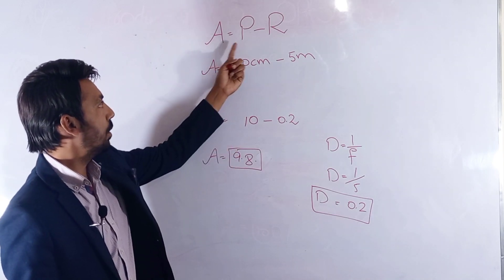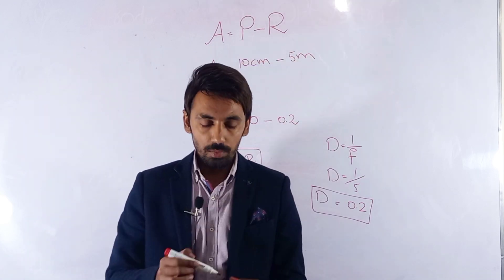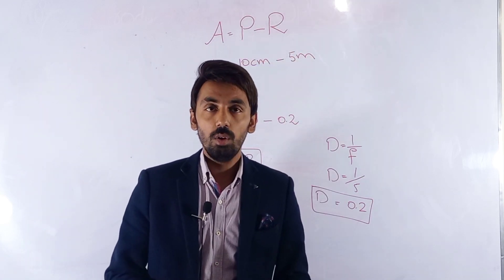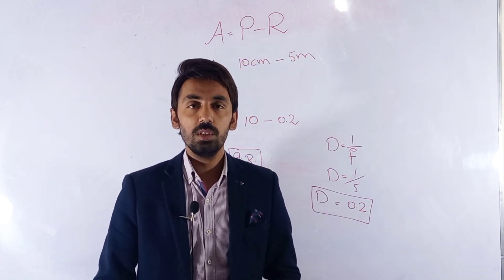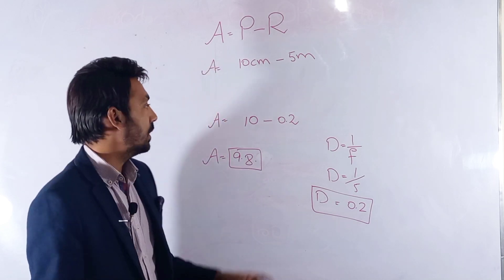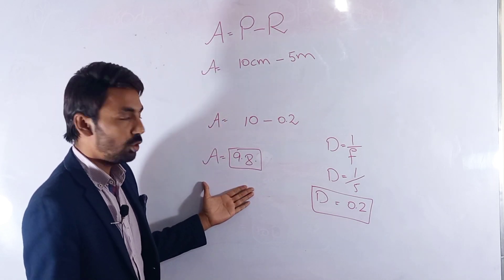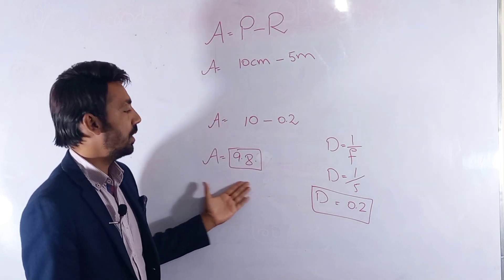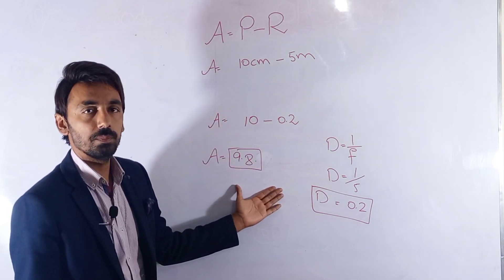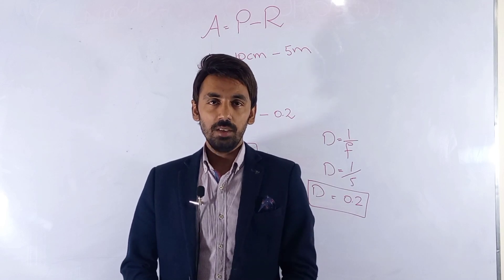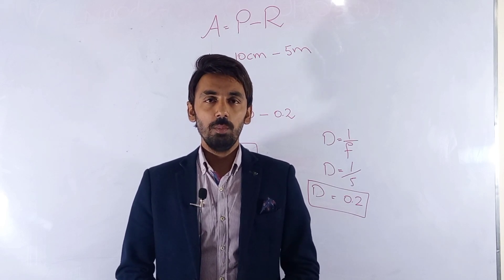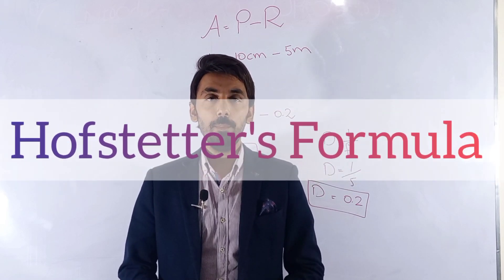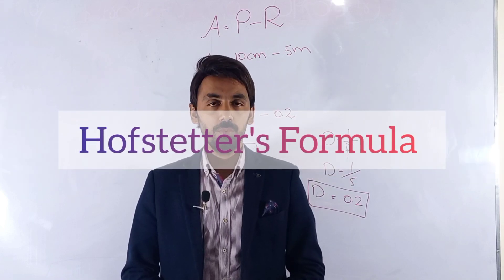So with the formula A equals P minus R, if you have the near point and the far point of a person you can calculate the amplitude of accommodation. In the next video we will learn about the amplitude of accommodation using the Hofstetter formula.